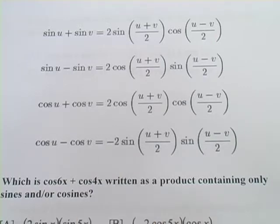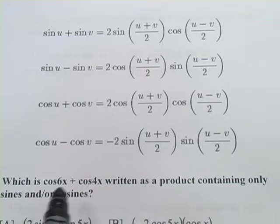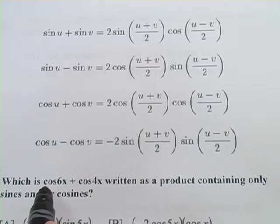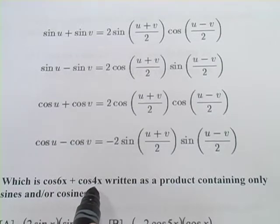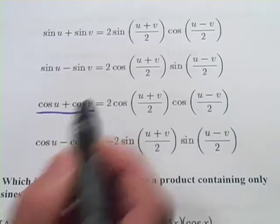Let's take a look at this first one. We have which is the cosine of 6x plus the cosine of 4x written as a product containing only sines and or cosines. So the cosine of 6x plus the cosine of 4x, that looks like the left side, that's our sum side, and it's just cosines, so it's probably going to be this guy right here.